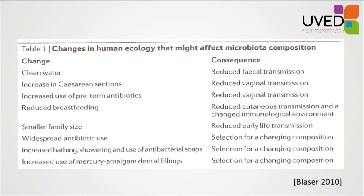Changes in human ecology affect the composition of microbiota. Here we have a list of elements that are at the origin of that change: water quality, increasing caesarean sections, increased use of preterm antibiotics or antibiotics given to babies, reduced breastfeeding, the fact that families are of smaller size, that antibiotics are used in a widespread fashion, and increased bathing and showering.